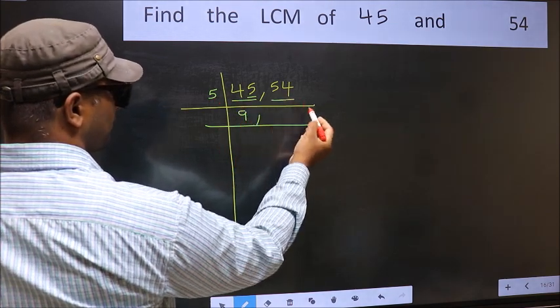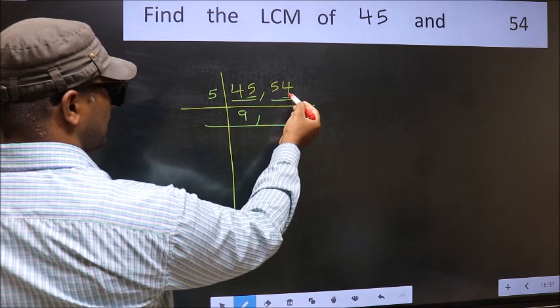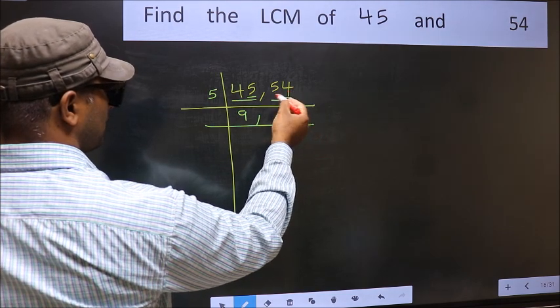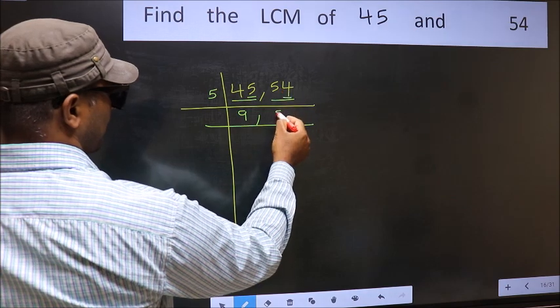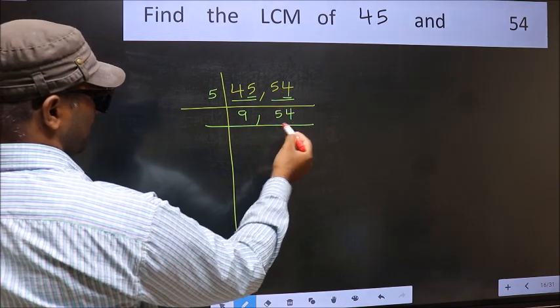The other number, 54. Last digit is neither 0 nor 5, so this is not divisible by 5. So you write it down as it is.